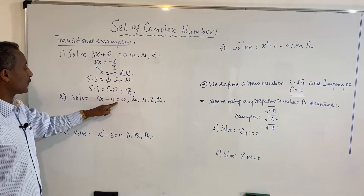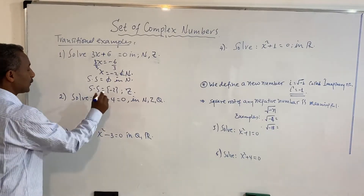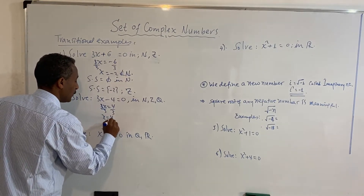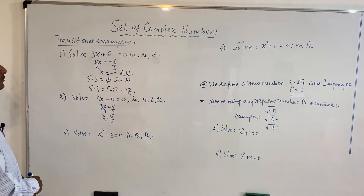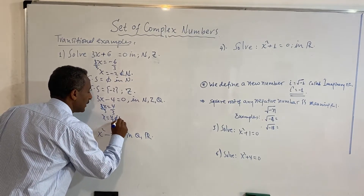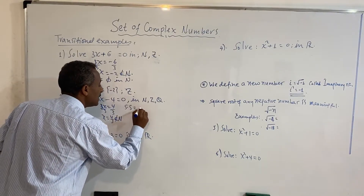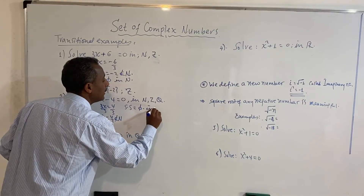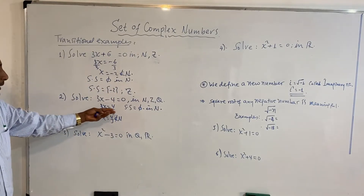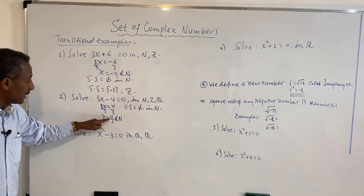In example two, x minus 4 equals 0 — or more precisely, 3x minus 4 equals 0 — in the natural numbers, or in Z or Q. The solution can be checked: x equals 4 over 3. In the set of natural numbers, the solution set is empty — this is not an element of the natural numbers.